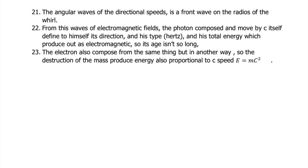The photon's total energy produces out as electromagnetic, so its age is not so long — it has an age and an amount, and this amount of energy disappears gradually with time and with movement. The electron is also composed from the same thing but in another way, so the destruction of mass produces energy, proportional to c-speed: energy equals mass multiplied by c squared. That means the electron is a photon multiplied by a photon — two photons grabbing each other. We are going to know what mass is in the second series.